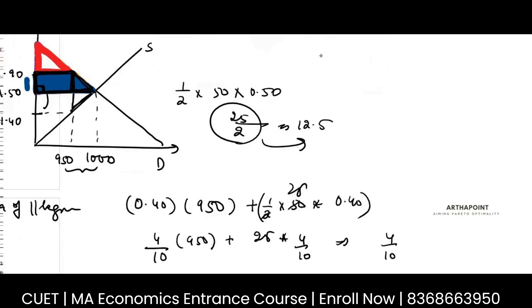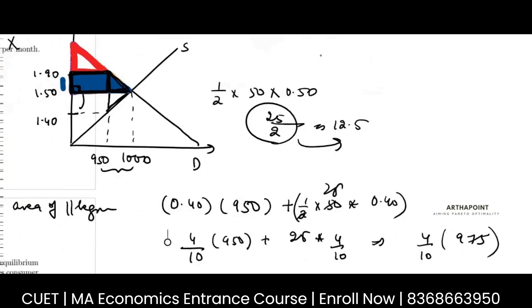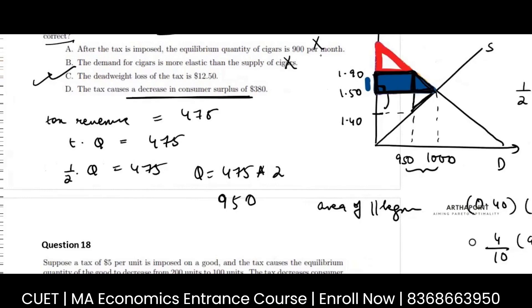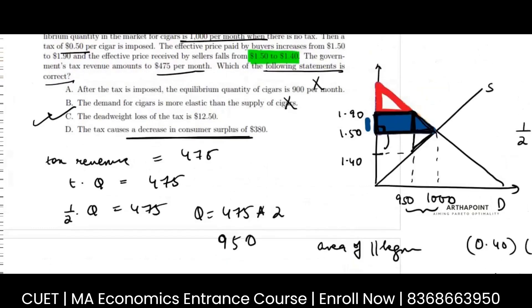So this is going to be 4 by 10 into 975. You can just calculate this. So the point is that the decrease in consumer surplus will be given by this.